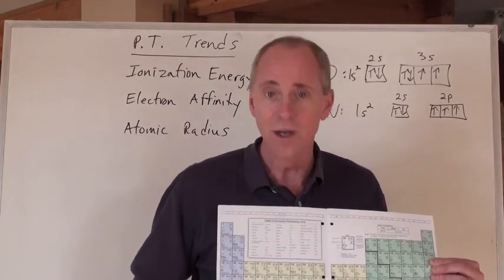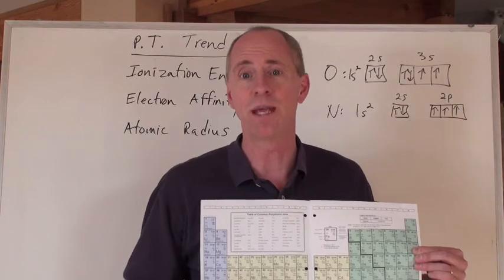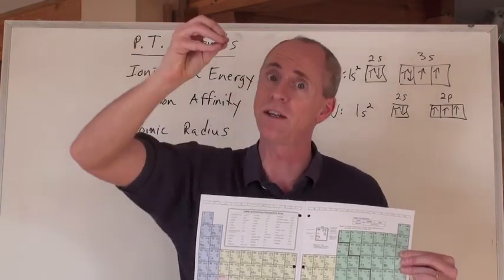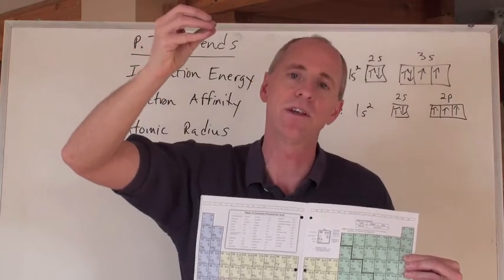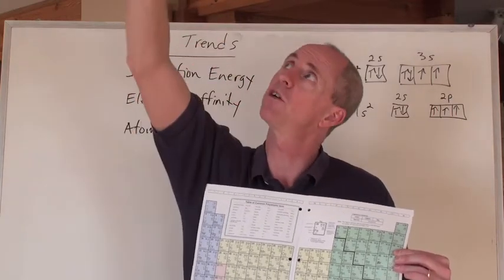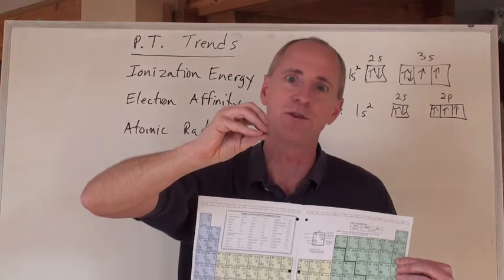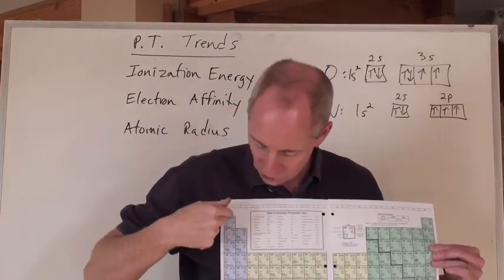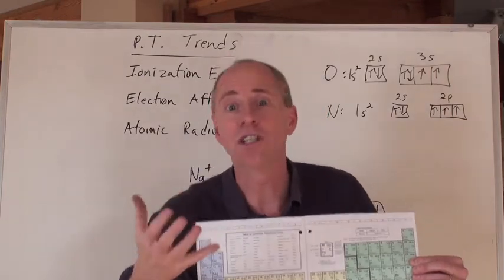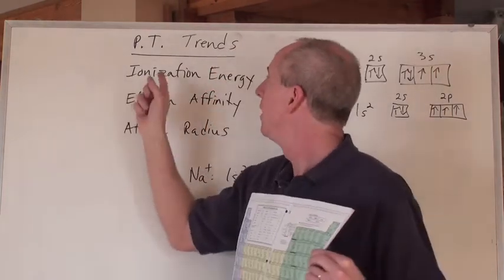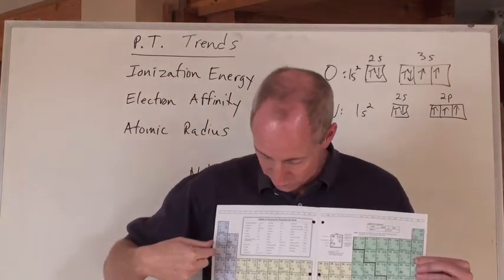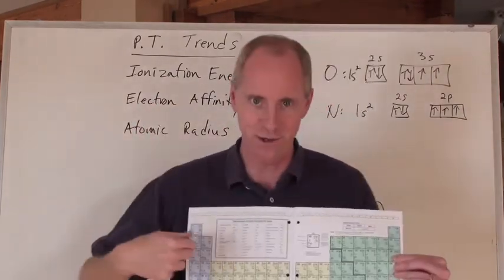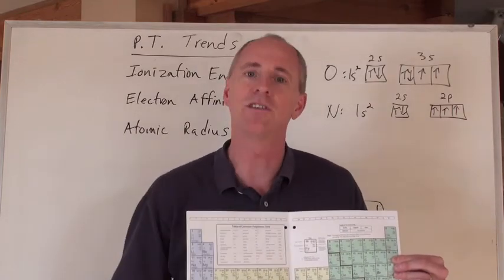Going down a group, it's harder to release a lot of energy when an electron drops from n equals infinity to n equals 7, compared to dropping to n equals 2, which releases more energy because it's closer to the nucleus. So just like ionization energy, electron affinity increases going across and decreases going down a group.